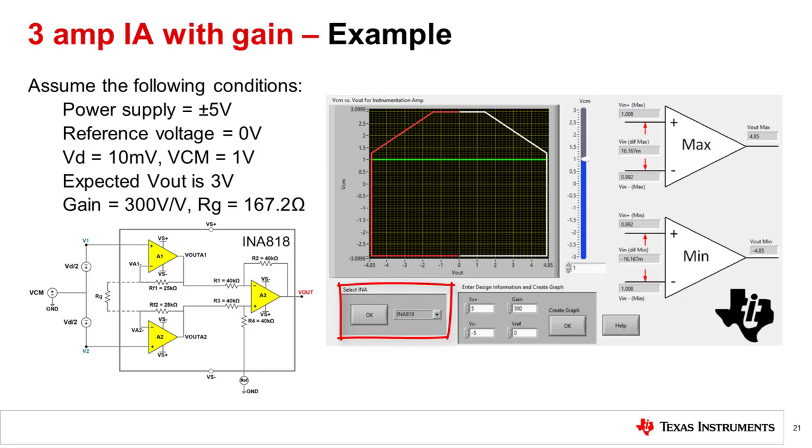We've selected the INA 818 from the drop-down menu and hit OK. Let's next put in our supplies, plus minus 5 volts. We will now enter gain, which we calculated to be 300 volts per volt. The reference voltage is grounded, so let's set that entry to 0. The common mode voltage we're trying to suppress is 1 volt. We can enter that into the box or use the slider to the right of the graph. Now click OK.